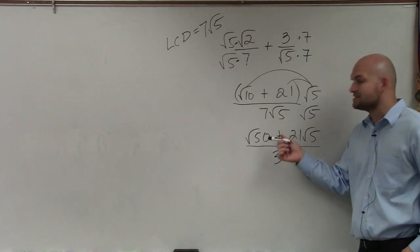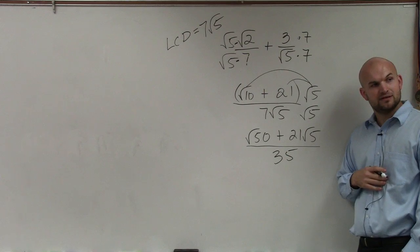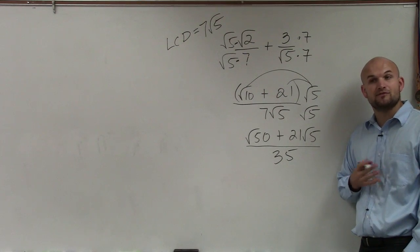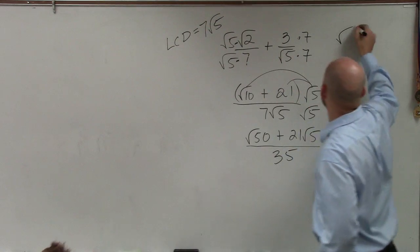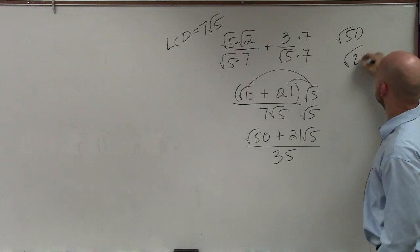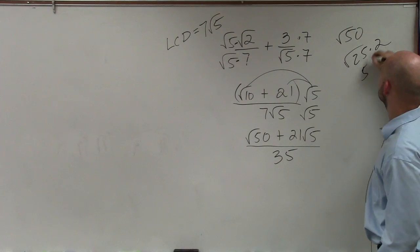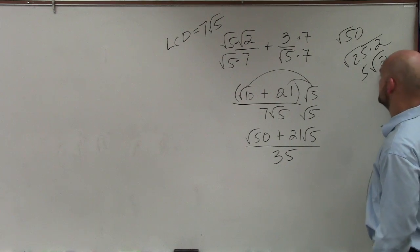Then the last thing we want to do is simplify √50. We know that 25 goes into √50, so we can rewrite this as √(25×2), which is 5√2.